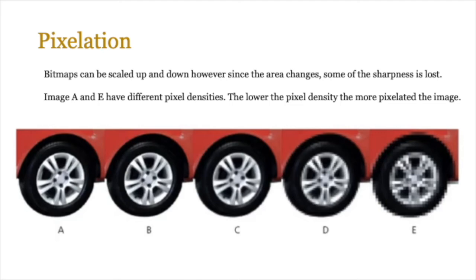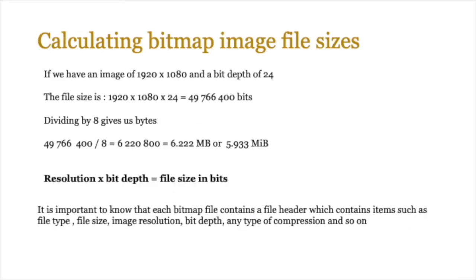So either you lose pixel density or you are approximating pixel density to fill a particular screen resolution, and that can cause pixelation. Bitmaps can be scaled up and down, however since the area changes some sharpness is lost. If you look at images A to E on screen, you can see how the same image, when scaled or when you change things like bit depth, ends up losing pixel density and appearing pixelated. If you scale it up and then zoom into the same part of the image it just looks much worse — the zoom makes image A look quite clear compared to image E.